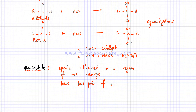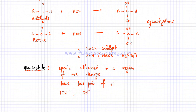Some examples of nucleophiles: in this particular case we're going to use the CN⁻ nucleophile because we're dealing with HCN molecules. CN⁻ has a lone pair which is attracted to the positive region in the aldehyde and ketone. We can also have OH⁻ acting as a nucleophile in other cases, and NH₃ is also a nucleophile in other reactions.